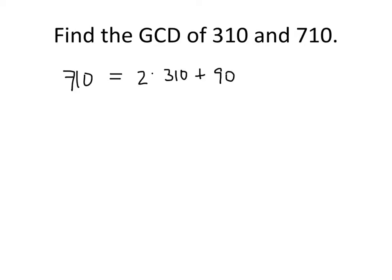So we've got our dividend, the number that got divided into, 710. We've got our divisor, 310. We've got our quotient, 2. And we've got our remainder, 90.